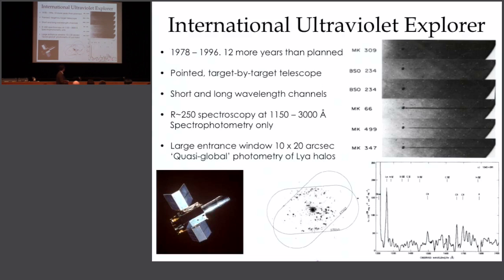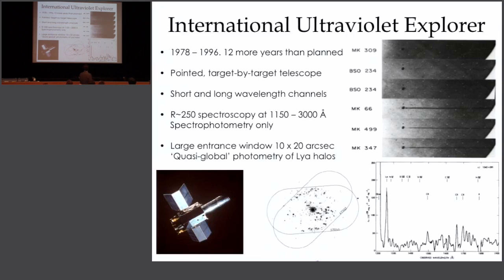You see a UV continuum here and a Lyman-Alpha emission line from a star-forming galaxy. This feature at the end is real — this is the geocoronal Lyman-Alpha line that I was arguing yesterday you had to select galaxies to redshift away from. That bright feature is exactly why you have to do that.